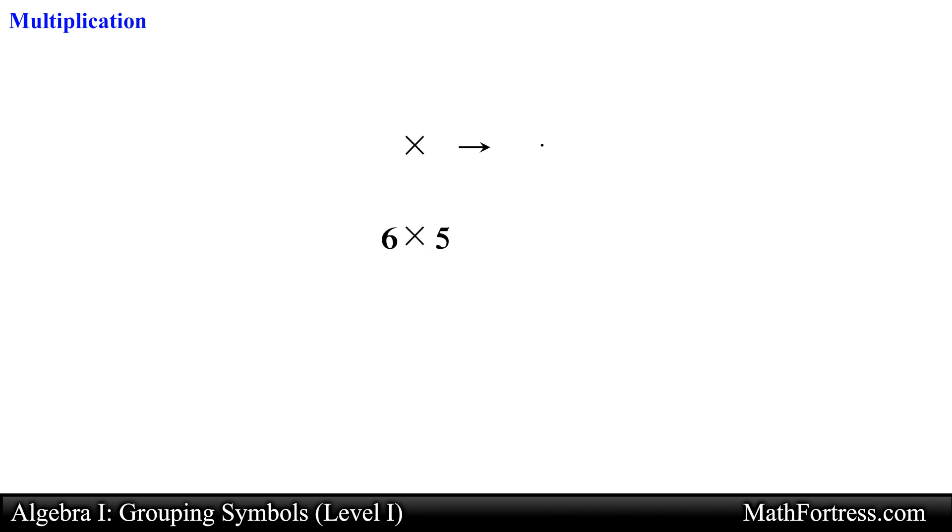For example, the expression 6 times 5 used to be written like this with the traditional multiplication symbol. In algebra, we can use a raised dot or use parentheses on one of the numbers or on both of the numbers. All these ways denote the same operation.